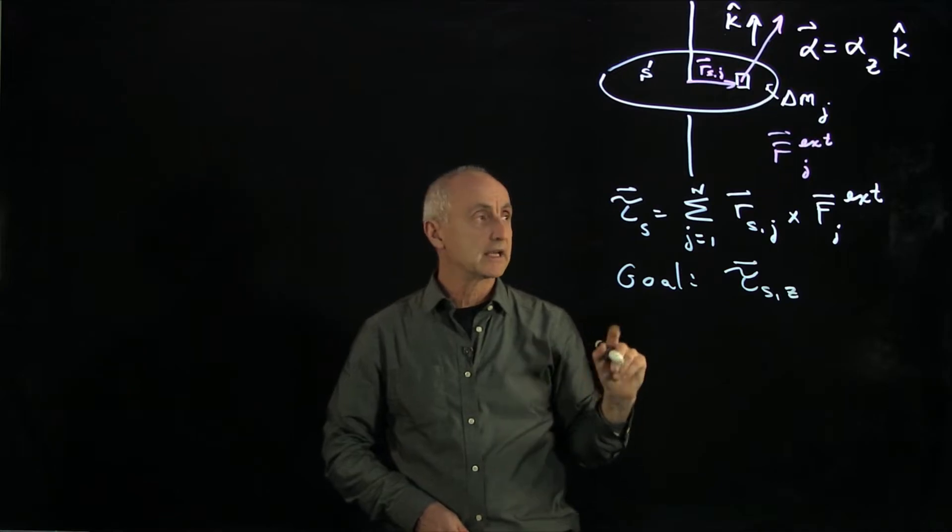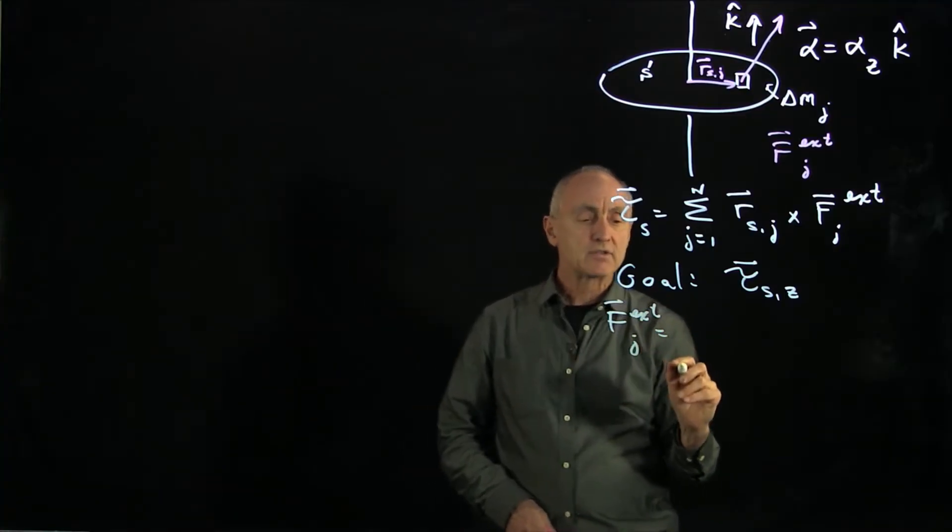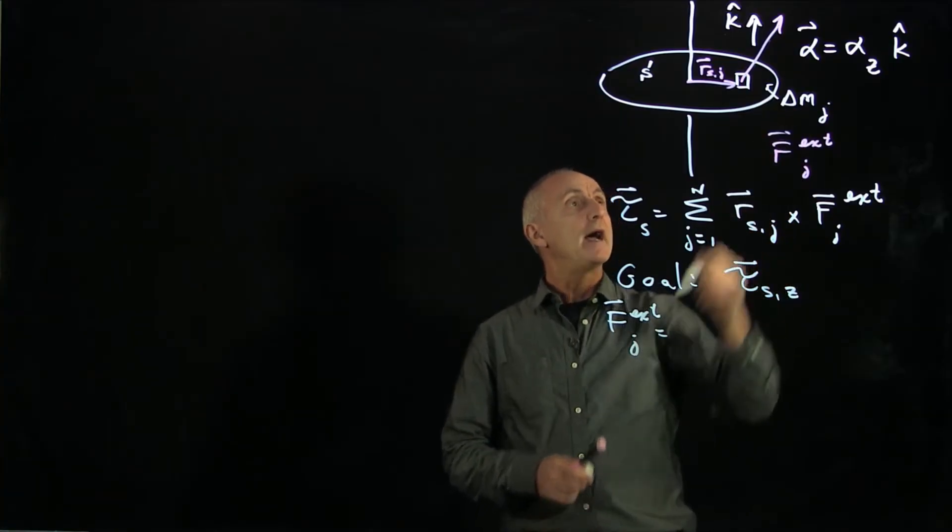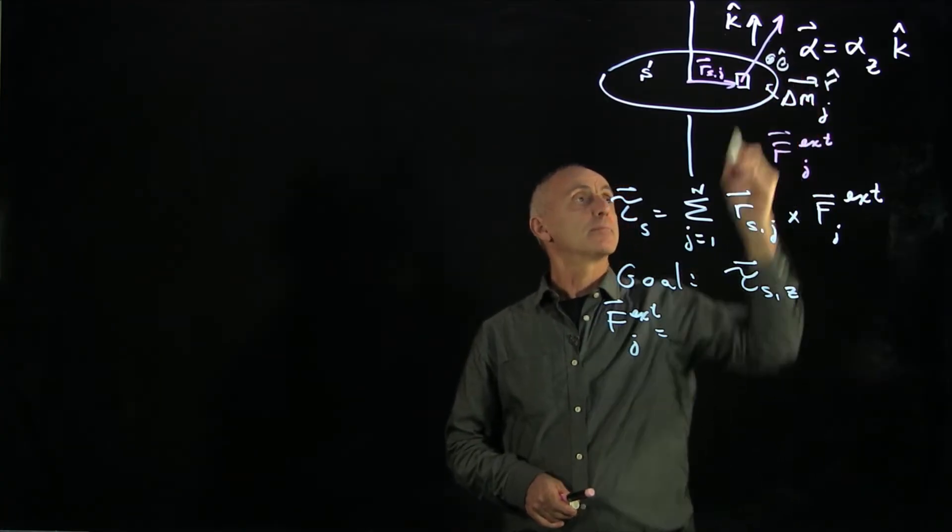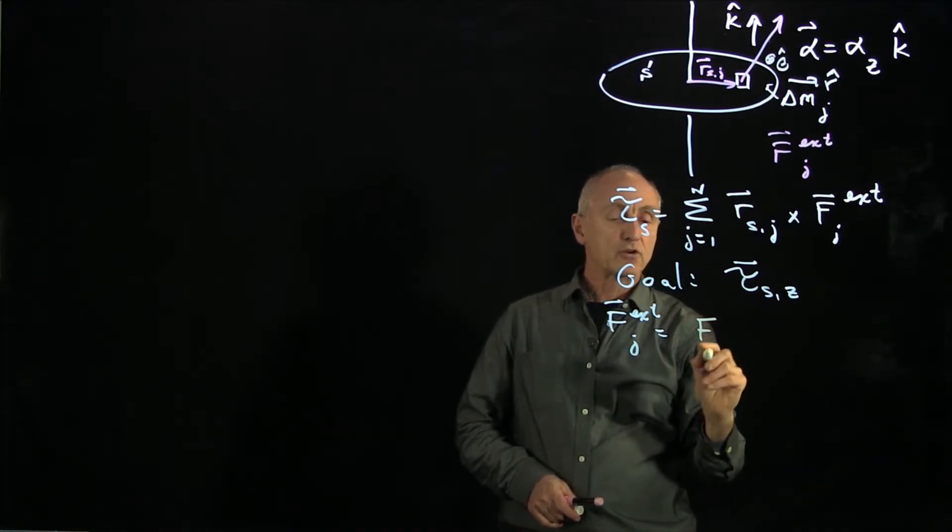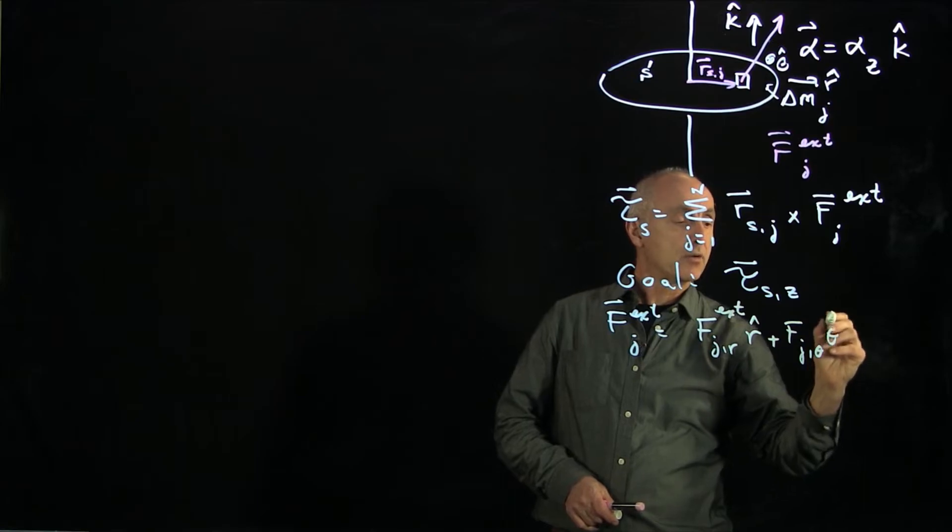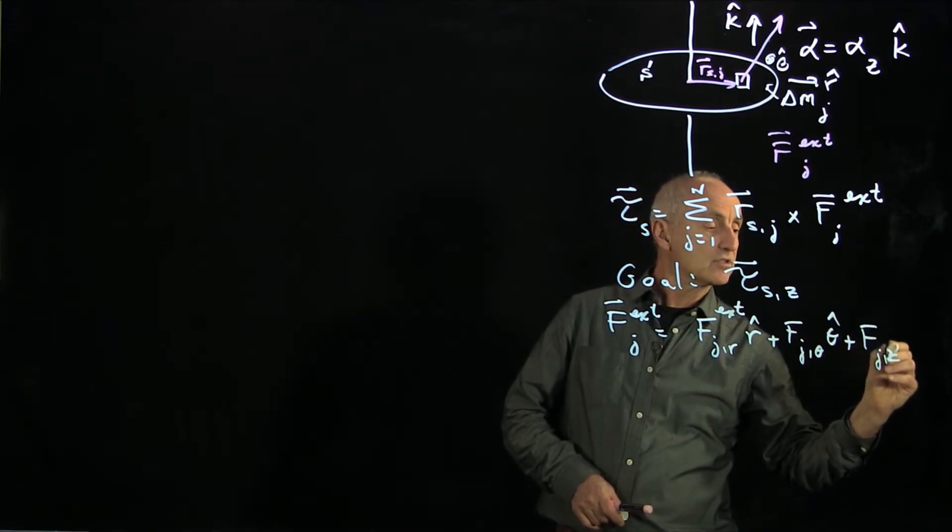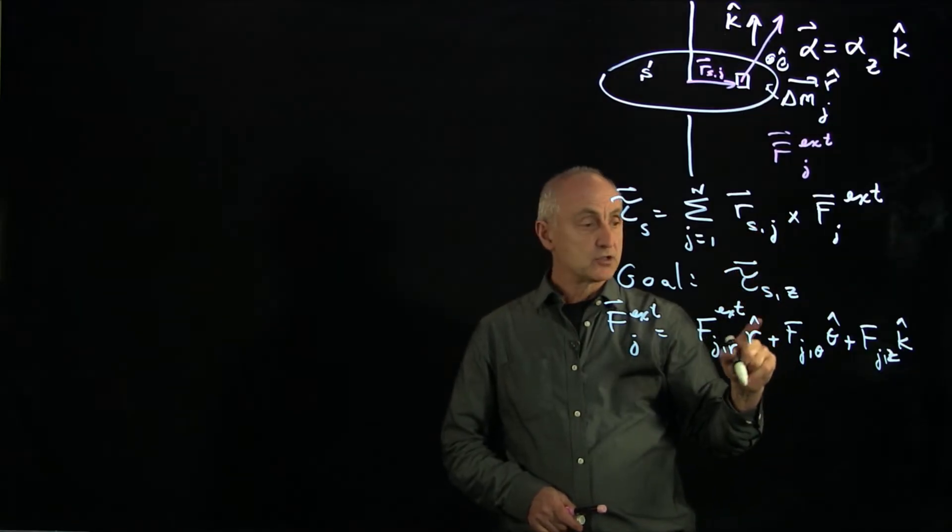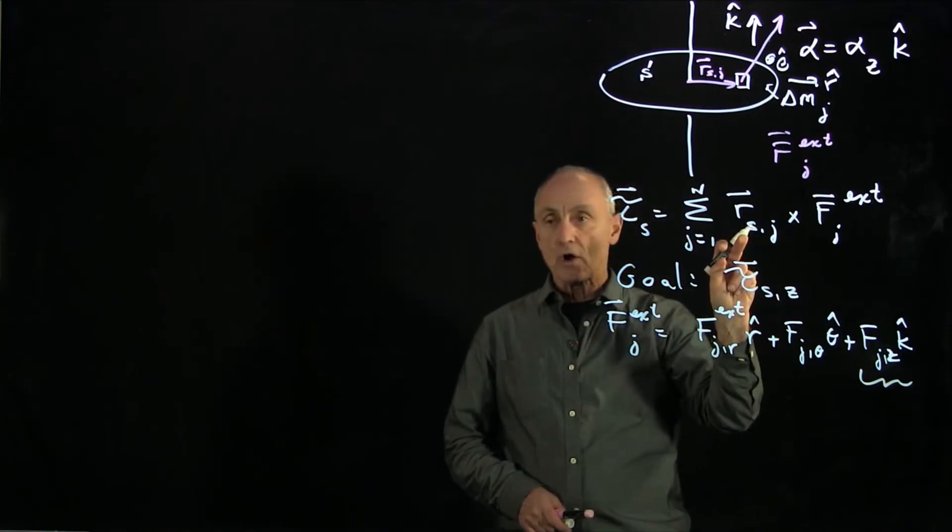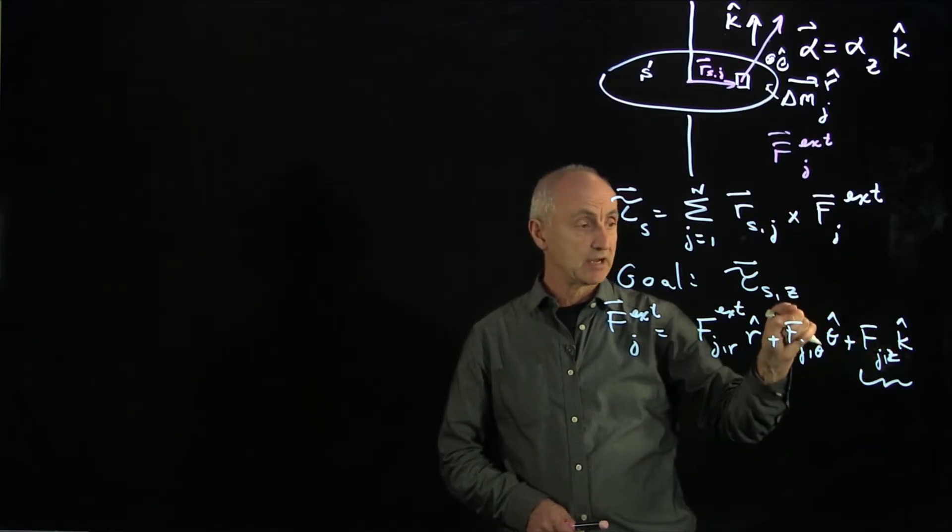So we can simplify our understanding a little bit by writing out this vector f external j as a component in the plane. And in order to describe that, we'll choose some unit vectors r hat theta hat going into the plane. We'll make another picture in a moment. So r vector can have an r component. And I'll keep the external in there. It can have a theta hat component. And it can also have a z component. But recall that a cross product is always perpendicular to either of the elements. So when I cross r with anything in the k direction, then that component will give a component that's not in the z direction. And so I can ignore that.